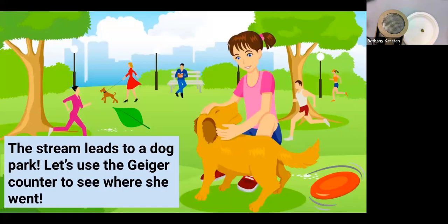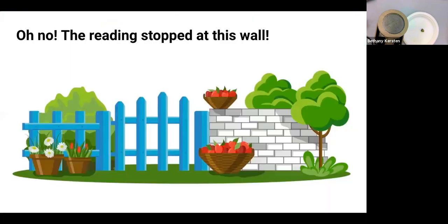Okay. So we followed the stream with our Geiger counter, and that led us to a dog park. That makes sense because Pluto loves the dog park. So let's keep using this to see where she went. But oh no, our reading stops at the wall. Why is that?